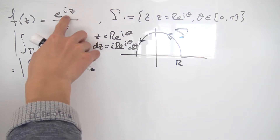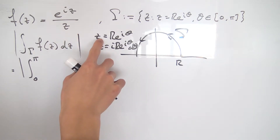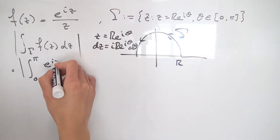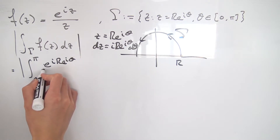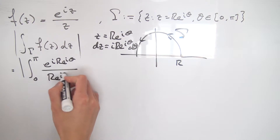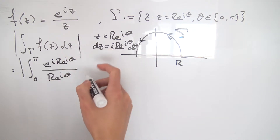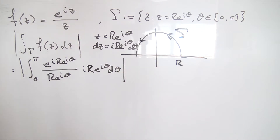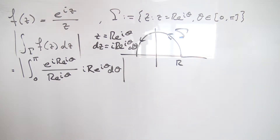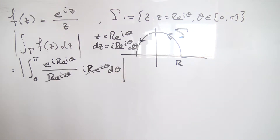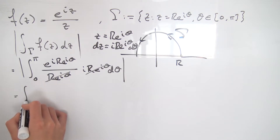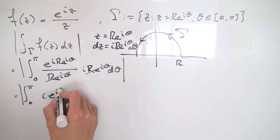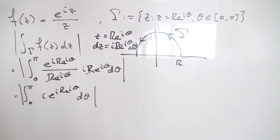The function f of z is e to the i z over z. Substituting z equals r e to the i theta, f of z becomes e to the i r e to the i theta, divided by r e to the i theta, and dz is i times r e to the i theta d theta — all inside an absolute value. The r e to the i theta factors cancel, leaving the absolute value of the integral from 0 to pi of i times e to the i r e to the i theta d theta.